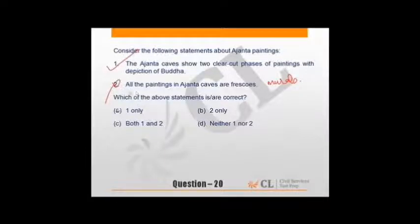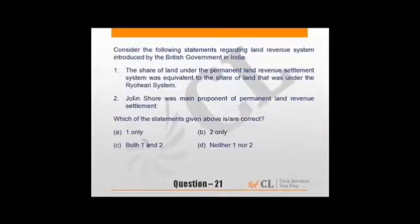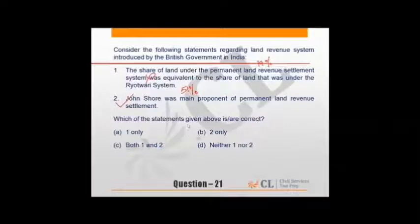Statements regarding land revenue systems introduced by British. Share of land revenue under permanent settlement was equivalent to Ryotwari - Ryotwari was more extensive, 51% for Ryotwari and 19% for permanent land revenue. John Shore was main proponent of permanent land revenue system - yes, Shore Committee is famous regarding permanent settlement. So two only stands correct.